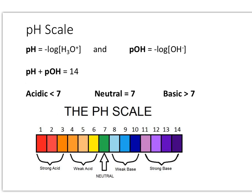Let's look at how we calculate pH and pOH. pH is going to be equal to the negative log of our hydronium ion concentration, while pOH is equal to the negative log of our hydroxide ion concentration. These two relationships are things you want to memorize.